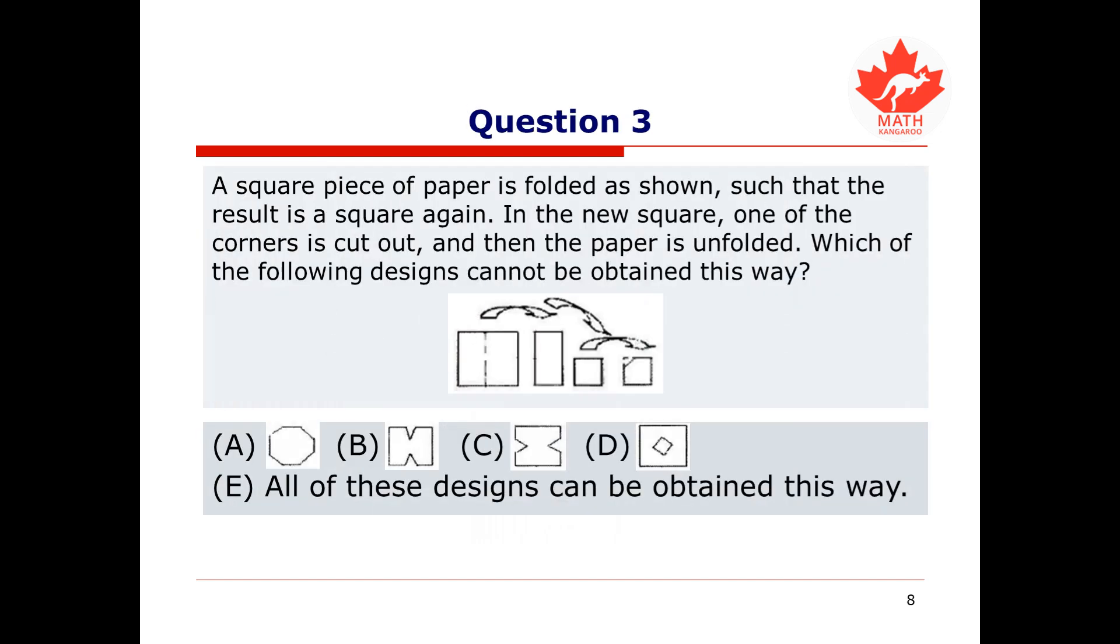Let's do one more question. A square piece of paper is folded as shown, such that the result is a square again. In the new square, one of the corners is cut out, and then the paper is unfolded. Which of the following designs cannot be obtained this way? Pause this video and try working it out yourself. And when you're ready, keep watching to see how it's done.